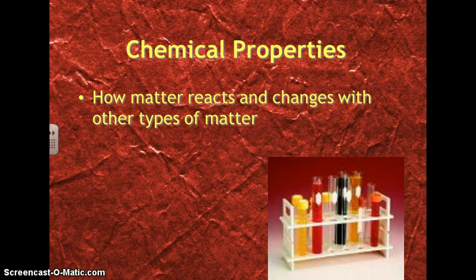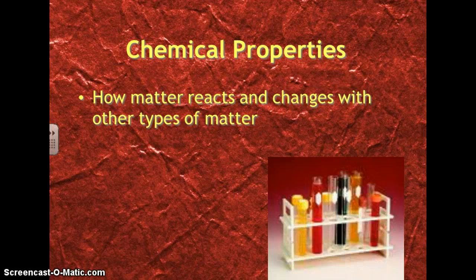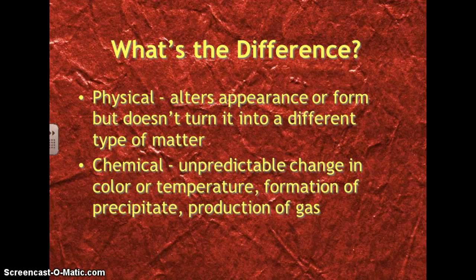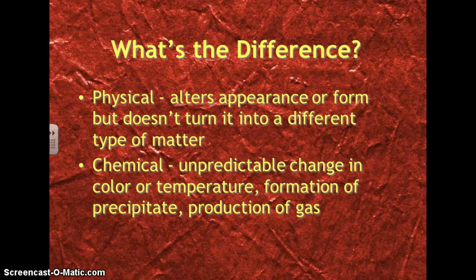Substances also have chemical properties, and chemical properties deal with how matter reacts and changes with other types of matter. So then, what's the difference between the two? Well, a physical change alters the appearance or form of something, but it doesn't necessarily turn into a different type of matter.